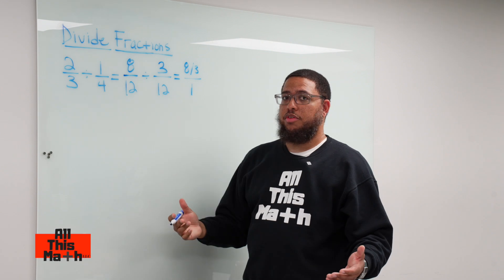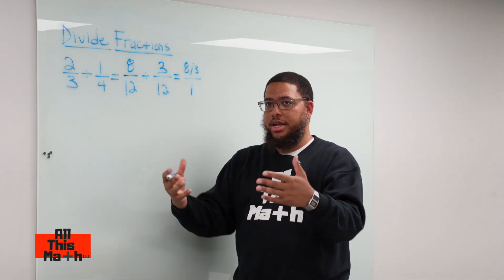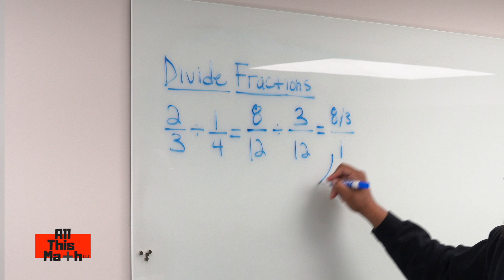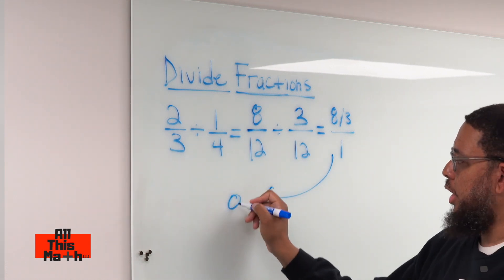What happens when you divide something by 1? The result is that number. So 8/3 divided by 1 is just 8/3.